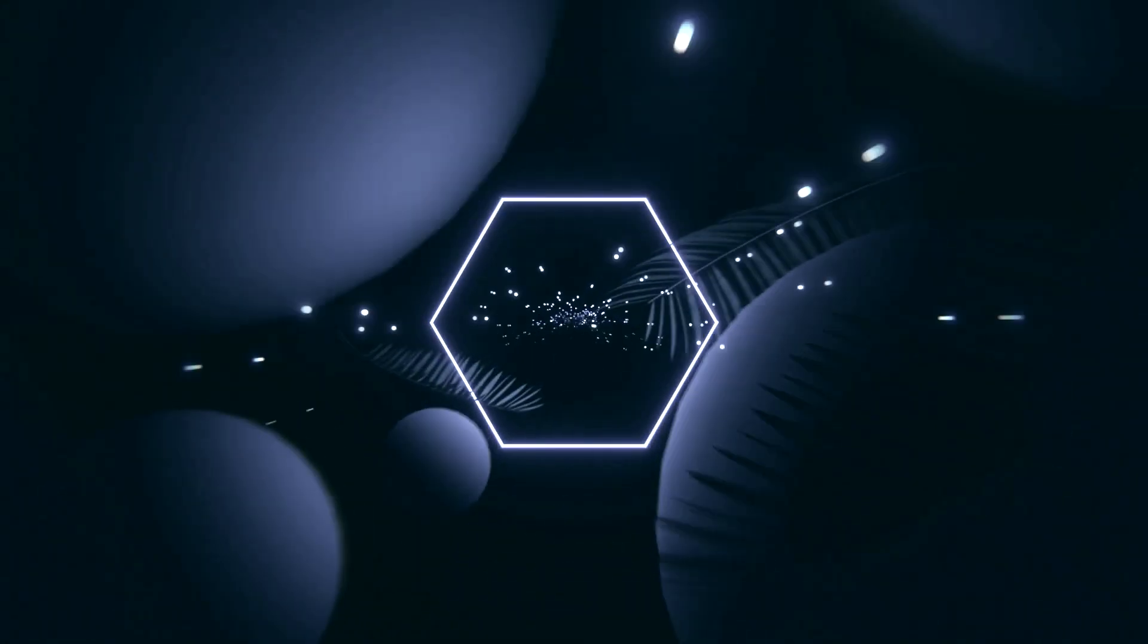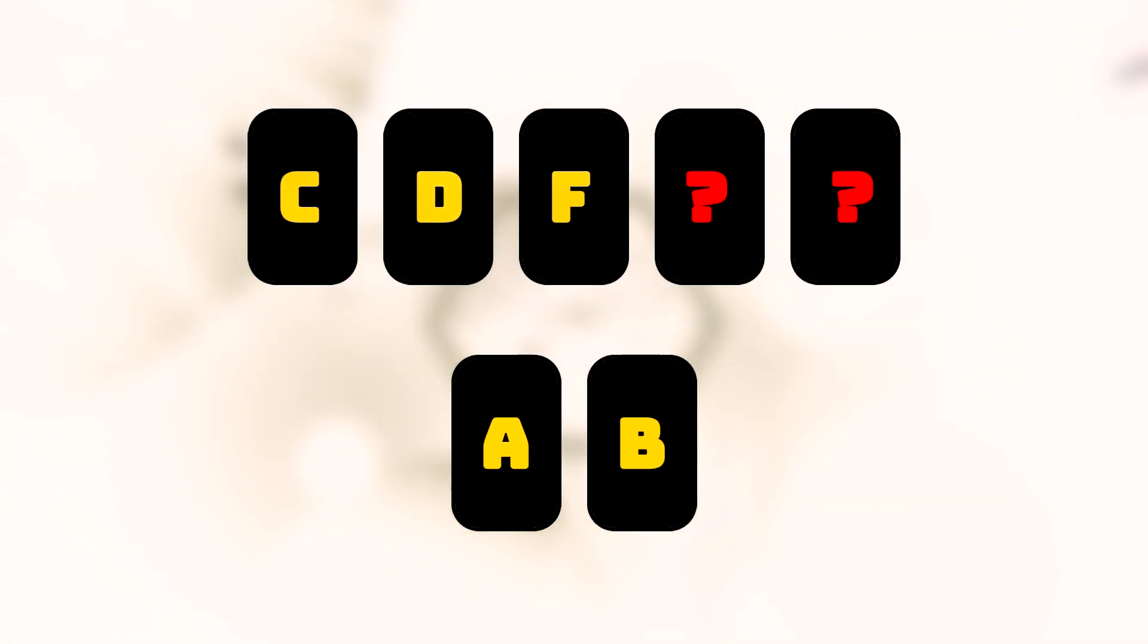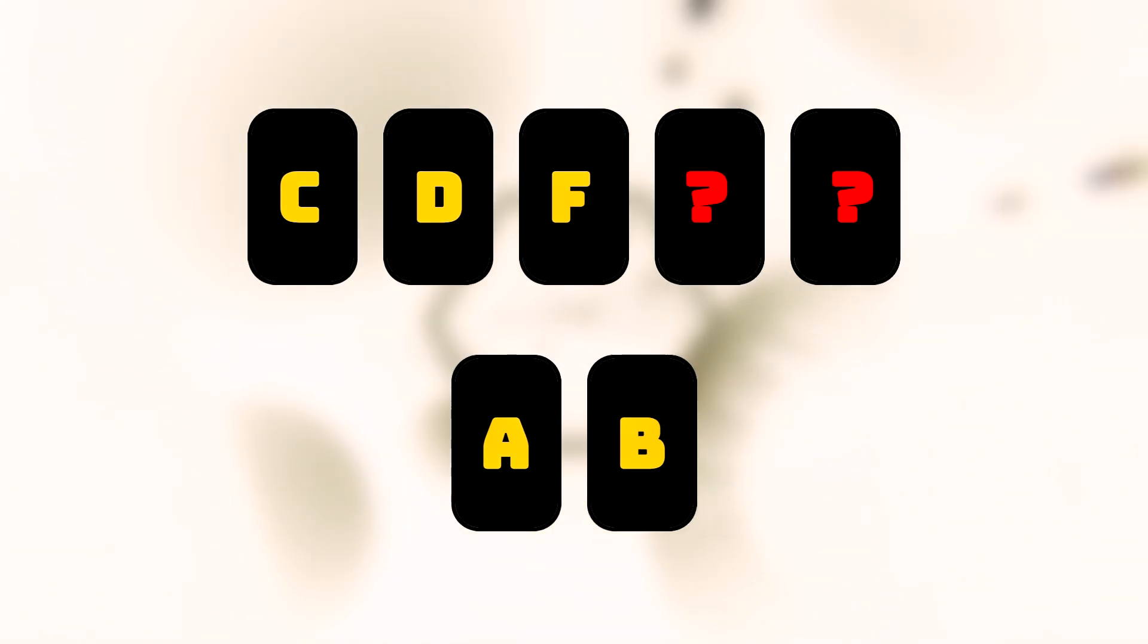For example, let's return to the poker game scenario. Suppose you have a pair of cards, A and B, and cards C, D and F are on the table. We can create millions of simulated games by removing cards A, B, C, D and F from the deck and randomly selecting cards for other players from the incomplete deck.